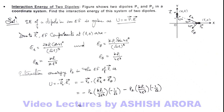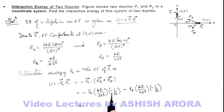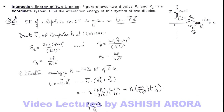On simplifying, the first term gives 2kp1p2 / (2√2·l³) and the second term gives kp1p2 / (4√2·l³). Adding these together and canceling the negative sign, we finally get the interaction energy as (3/4) × k·p1·p2 / (√2·l³). So that will be the answer to this problem.